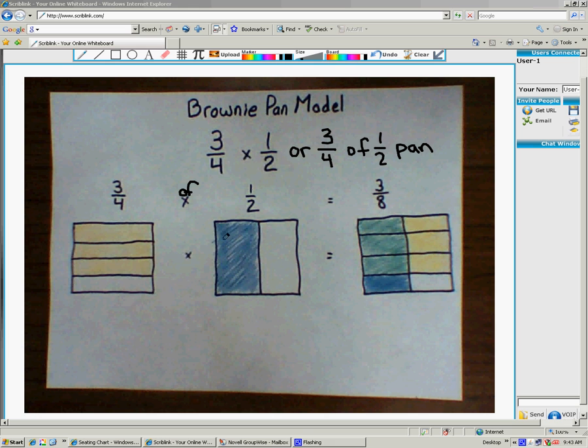So, here we have 3 fourths. Here we have 1 half. The answer is 3 eighths. Now, the answer is what is in the green. And the reason is because that's what overlaps.